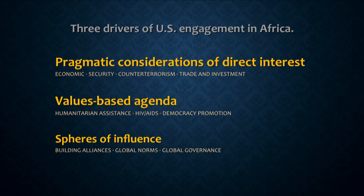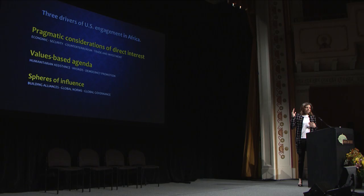Let's start with the three clumps of interest that the U.S. has in Africa, which are fairly consistent over time. First, you have pragmatic considerations of direct interest — things like economic interest, strategic minerals, oil, and so forth. You have security interest and counter-terrorist interest. Top of that list is protecting U.S. citizens, U.S. assets, and the U.S. homeland. It sounds cold, but that's kind of the number one priority in national interests in every country.